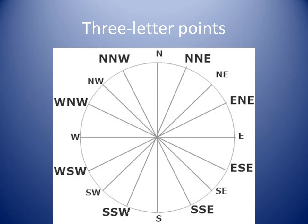The three-letter points lie exactly in the middle between the cardinals and intercardinal points. North-northeast lies between north and northeast. East-northeast lies between east and northeast. East-southeast lies between east and southeast. South-southeast lies between south and southeast.